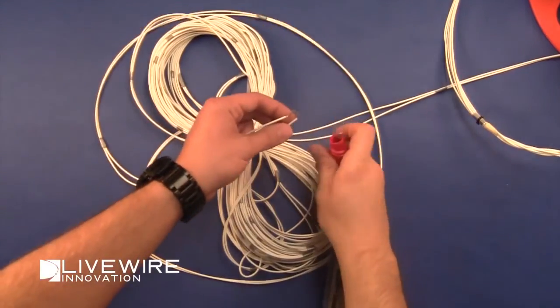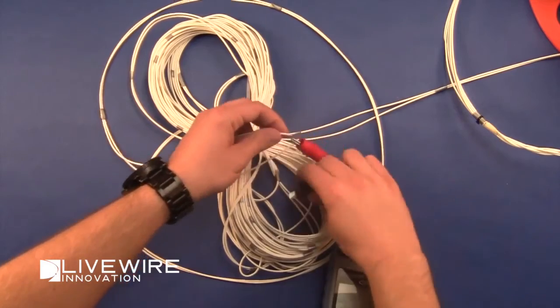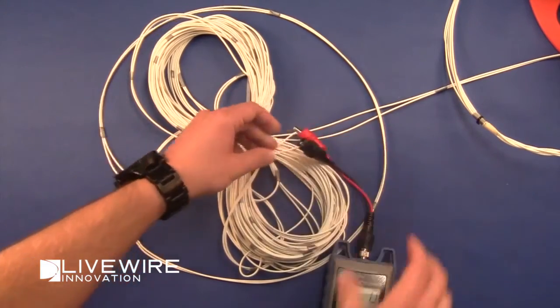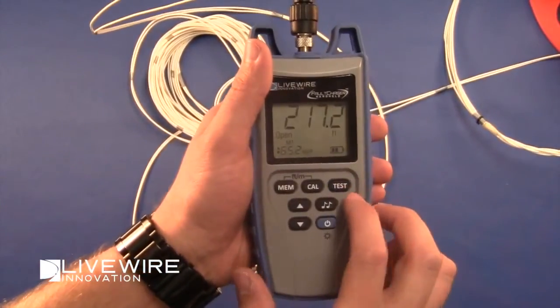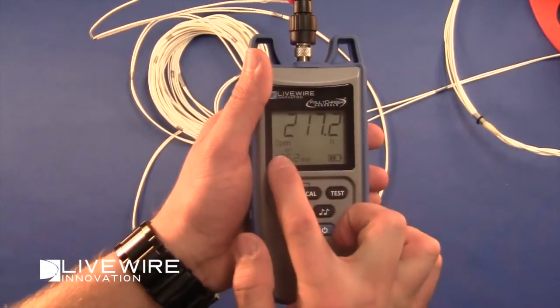In this first example, we'll be finding the location of the open circuit or break in this discrete bundle. We know that the NVP value is 65.2, which we have already set on the Fault Chaser. It tells us that the open is at 217 feet.